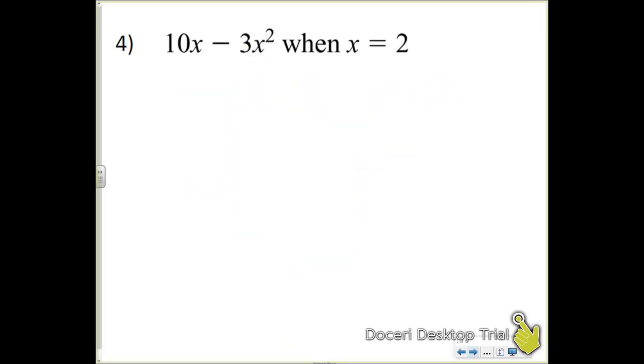The next problem here we have to substitute before evaluating. So we have to substitute x with a 2. So this becomes 10 times 2 minus 3 times 2 squared. And then evaluate. Most people didn't mess up here. So 10 times 2 is 20.